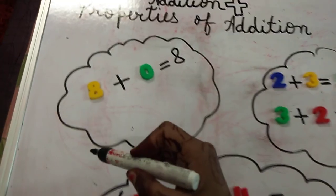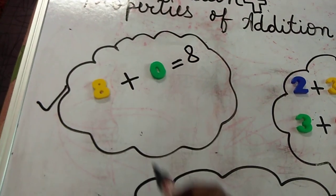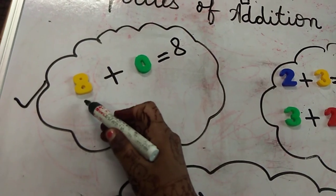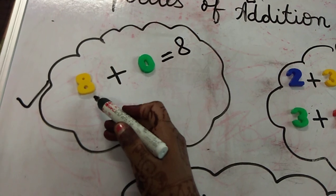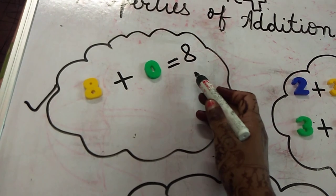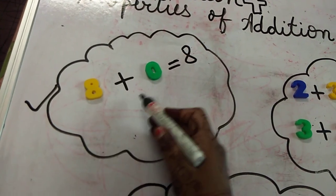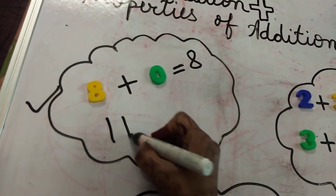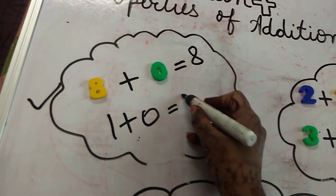The first property: if we add 0 to any number, then its identity will never change. It will remain the same. Means 8 plus 0 is equal to 8. Similarly, if we take 1 plus 0, it will be 1.